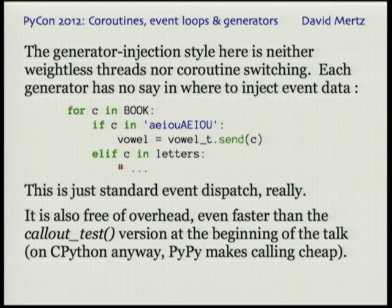This is even faster than the very first slide with the callout test, because generators are really cheap — there's not even the function call setup, let alone the process setup. It's a lot faster in CPython; it's about the same in PyPy.